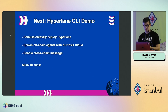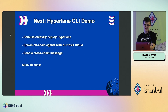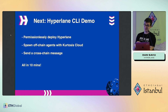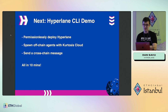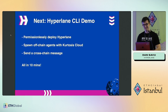We'll cover spawning off-chain agent infrastructure with essentially one click using Kurtosis Cloud — shout out to the Kurtosis team, they worked really hard to make this happen — and then sending a cross-chain message. You can have this entire infrastructure spun up in less than 10 minutes.